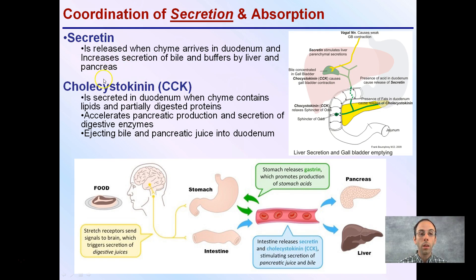Also at the same time, CCK or cholecystokinin will be released, and this is secreted in the duodenum — the early part of the small intestine — when chyme contains lipids and partially digested proteins.